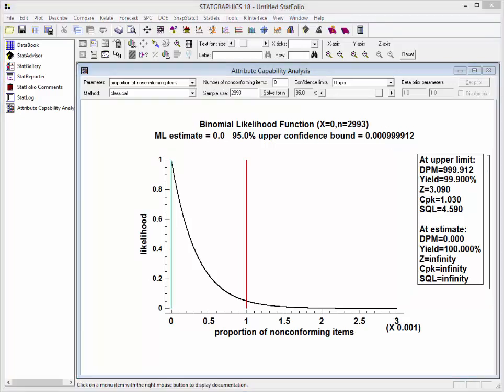Although sampling almost 3,000 items may seem like a large number, it's not surprising if you're trying to demonstrate that the proportion of non-conforming items is less than 1 out of 1,000.